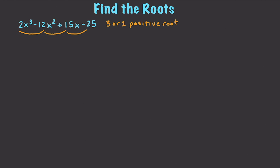Now we've got to do the negative test. Substituting negative x gives us negative 2x to the third minus 12x squared minus 15x minus 25. How many negative roots do I have? None — the signs for every single one of these are negative, so there are no sign changes and no negative roots. So that tells us we're either going to be looking for one root or three roots. And that brings us to the rational root test.